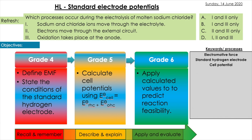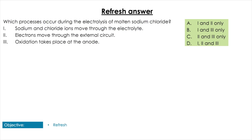With this question, hopefully you will have noticed that if we think about OILRIG, we know that sodium and chloride ions are going to move through the electrolyte. Electrons also move through the external circuit, and we know that oxidation happens at the anode and reduction happens at the cathode. So indeed, one, two, and three are all true, and therefore the answer is D.